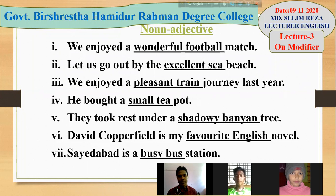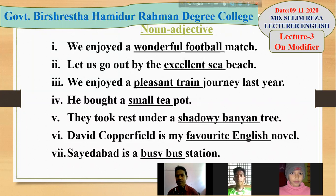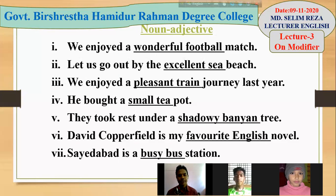Fifth example: 'They took rest under a shadowy banyan tree.' 'Tree' is a noun, 'shadowy' is an adjective, 'banyan' is a noun — one kind of tree, a name of a tree. Here we use an adjective and a noun together; they express a sense or meaning, so it's a noun adjective used as premodifier.